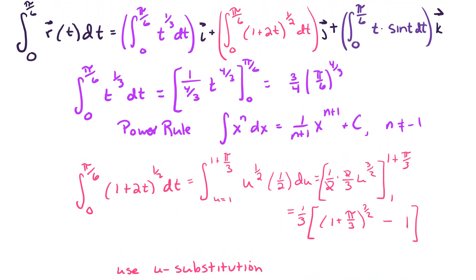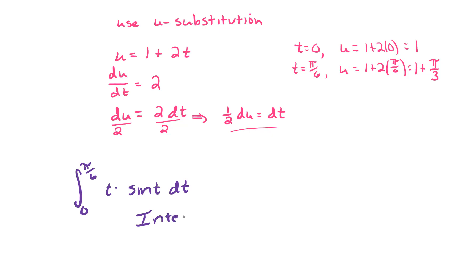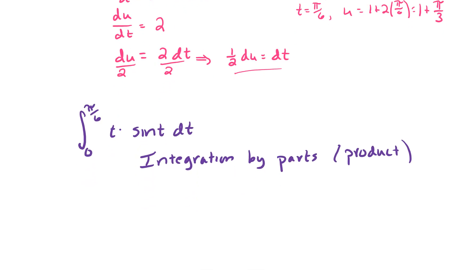Lastly, we need to do the integral from 0 to pi over 6 of t times sine t dt. For this problem, integration by parts is going to be a great strategy. The reason is that we have a product in the integrand, and integration by parts is very much like a product rule for integrals. We pick a u and a dv, and we want u to be something that gets simpler when differentiated — a good choice for u is t.